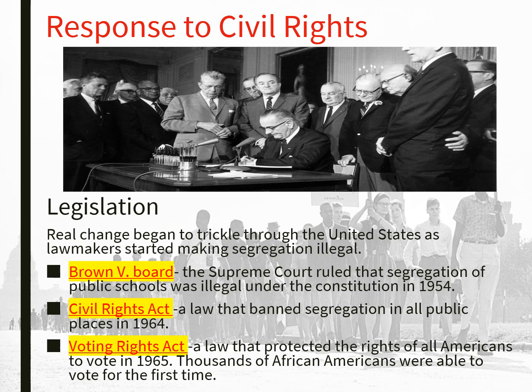A big response to the civil rights movement was legislation. Congress finally passed laws that began making real change. Brown v. Board of Education — the Supreme Court ruled that segregation of public schools was unconstitutional in 1954. Then the Civil Rights Act of 1964 banned segregation in all public places. Finally, the Voting Rights Act of 1965 protected the rights of all Americans to vote, and thousands of African Americans were able to vote for the very first time.